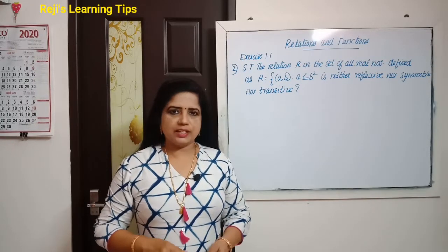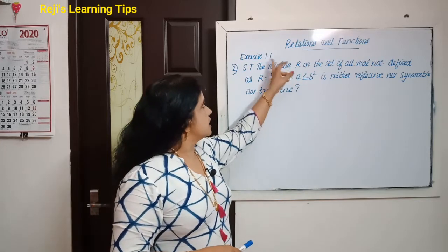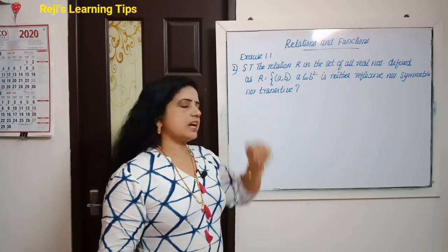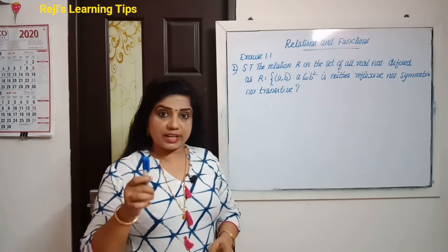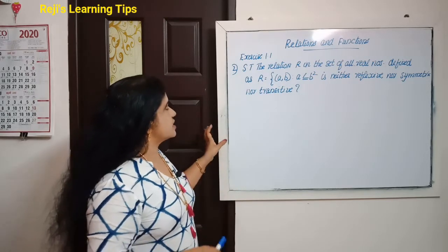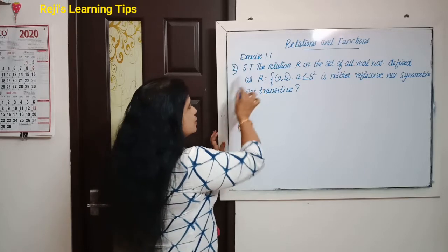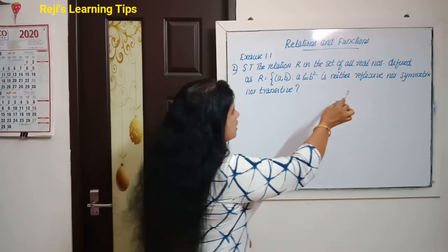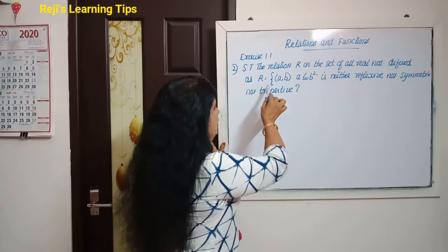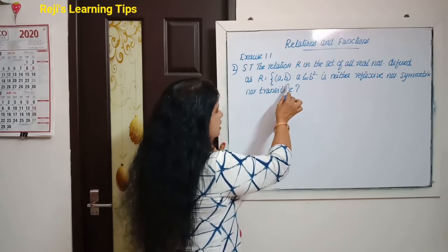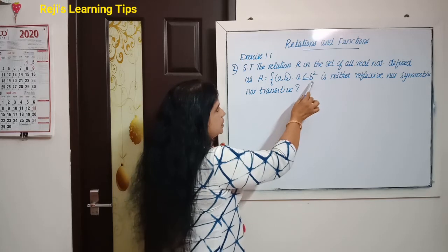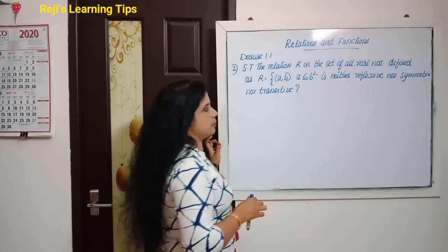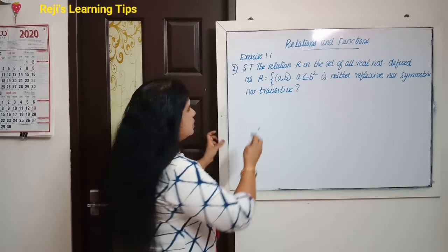Hi everyone, welcome back. Today we are going to discuss question 2 from Exercise 1.1 from Relations and Functions. We need to show that the relation R in the set of all real numbers, defined as R = {(a, b) : a ≤ b²}, is neither reflexive nor symmetric nor transitive.